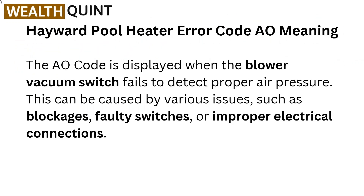Hayward Pool Heater Error Code AO meaning. The AO code is displayed when the blower vacuum switch fails to detect proper air pressure. This can be caused by various issues such as blockages, faulty switches, or improper electrical connections.